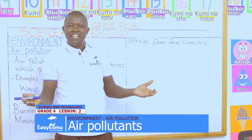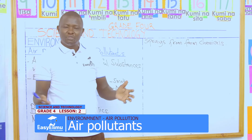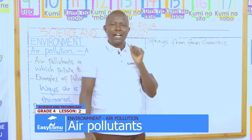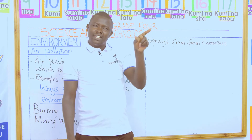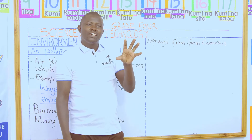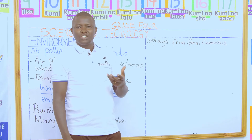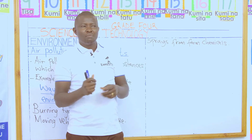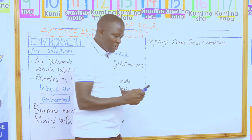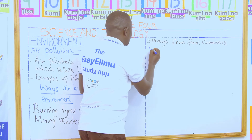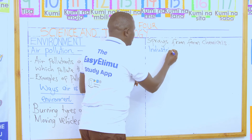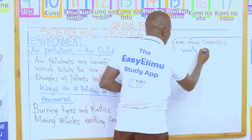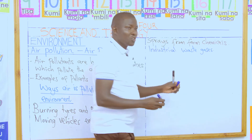Another source you may not have considered: when you go around marketplaces, there are industries using a lot of energy and emitting gases. Those gases are also polluting the environment. We call these industrial waste gases, and they are also pollutants.